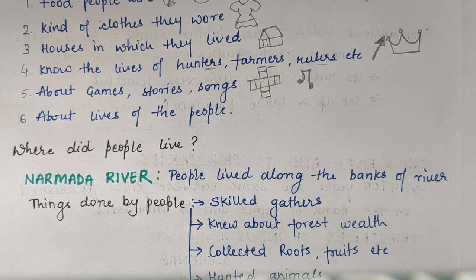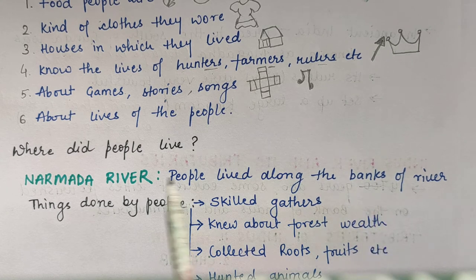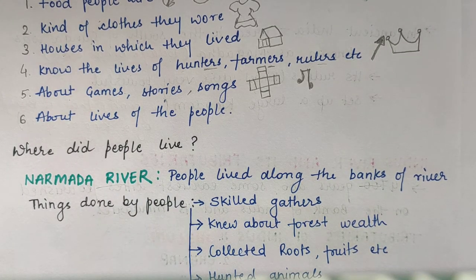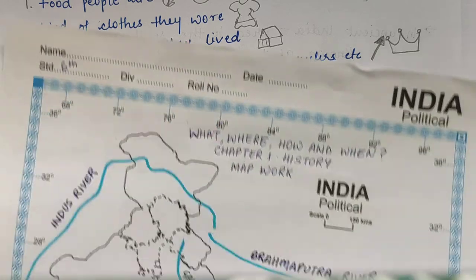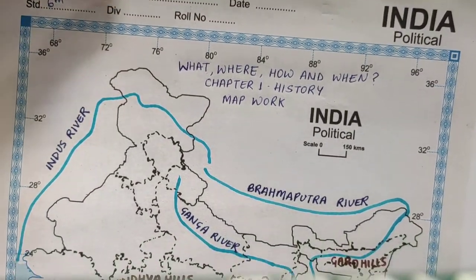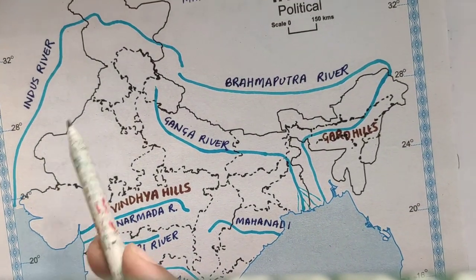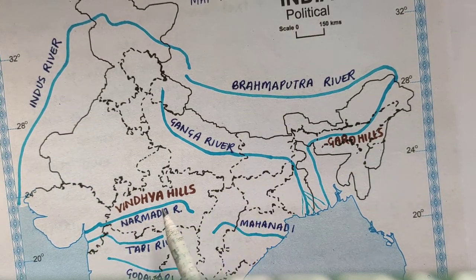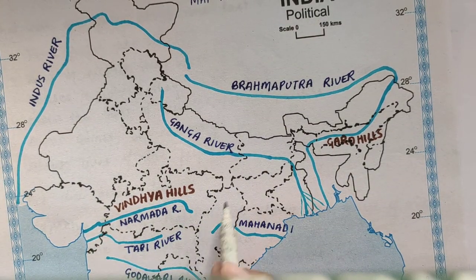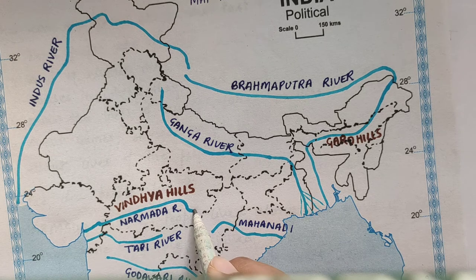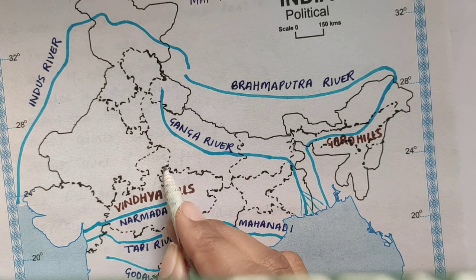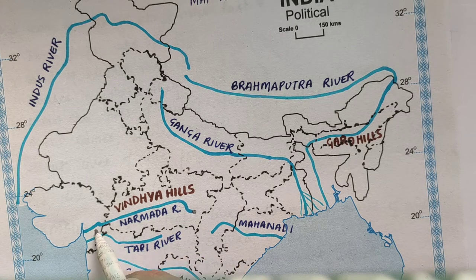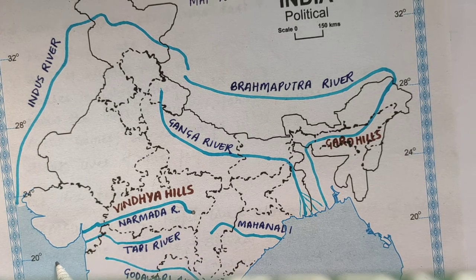So people started living near the banks of rivers — banks matlab kinare. First of all, the Narmada river. Here is the map of India. You can see here there are many rivers like Indus, Brahmaputra, Ganga. There is a river called Narmada which starts from MP — that is Madhya Pradesh — and ends in the Arabian Sea.